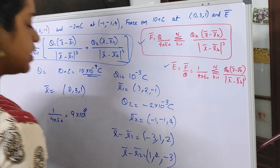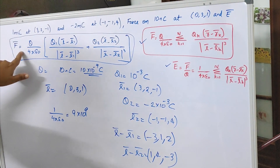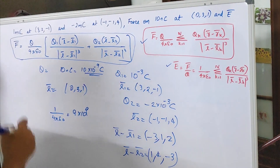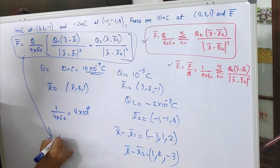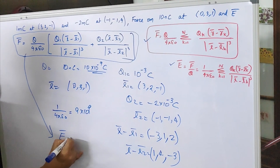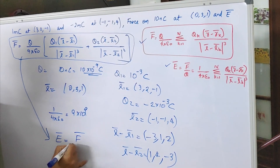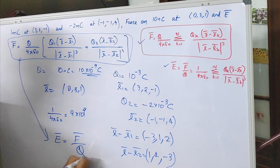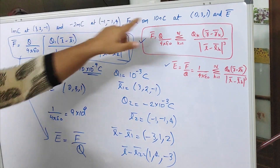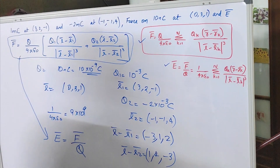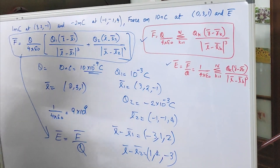You can substitute all this and get the answer. To find electric field intensity E, you just have to take the final answer and divide by q, where q is 10 nanocoulomb. This is how you can solve that problem.